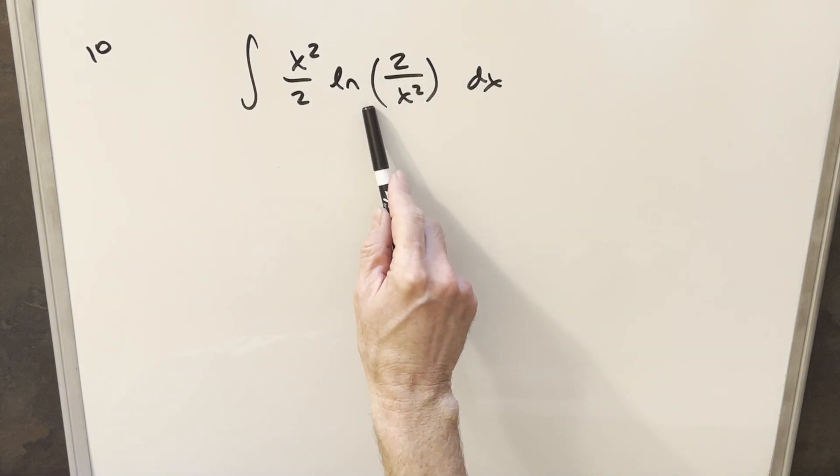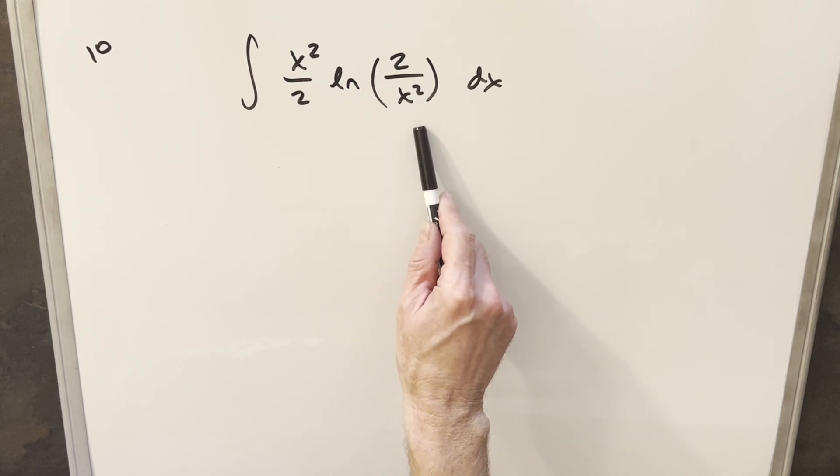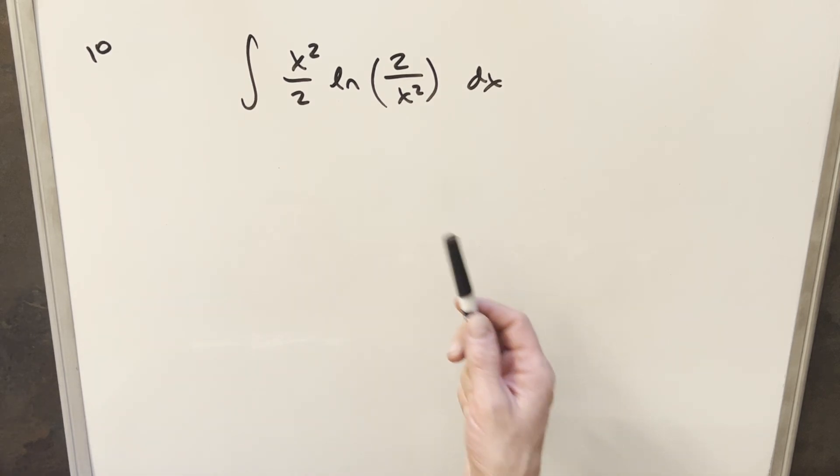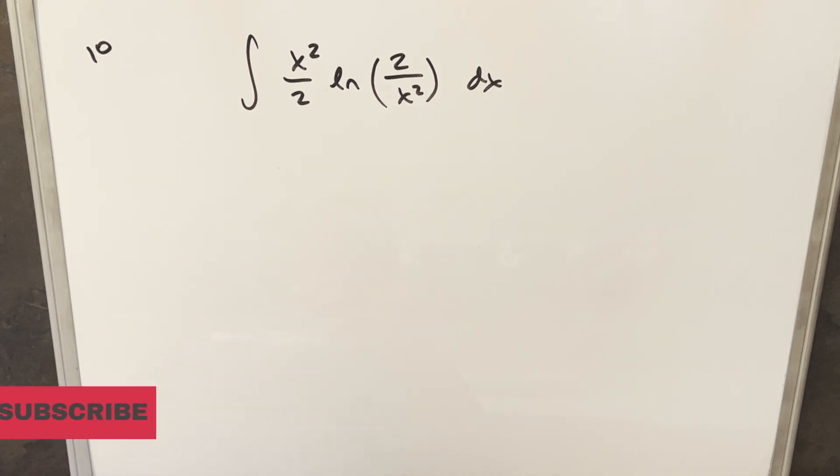So one thing I try with this is just trying to split this with log properties and write this as natural log of 2 minus natural log of x squared. It's kind of nice, but we still have to do integration by parts. We still have a natural log with an x in it. So it didn't really help me that much.